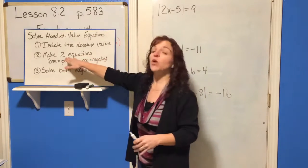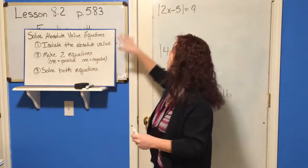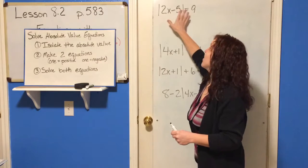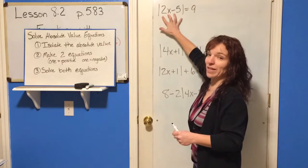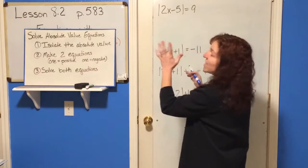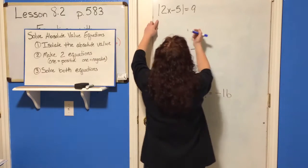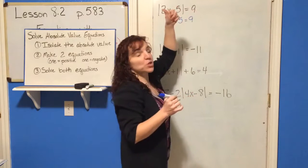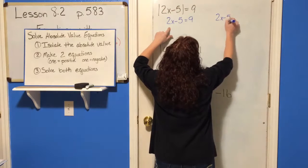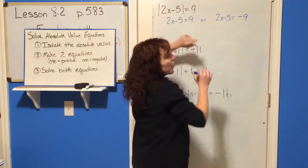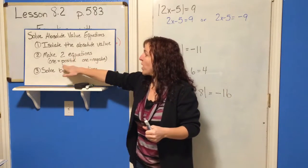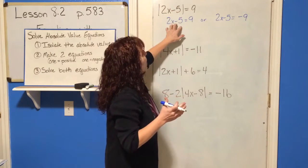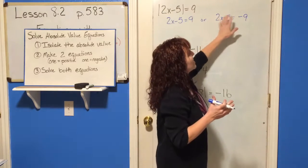Once you do that, you're going to make two equations — one equal to a positive and one equal to a negative. In this case, the problem has already been isolated, so we already have the absolute value of 2x minus 5 equals 9. That's the first step — it's already by itself. Step 2 is to make two equations: one positive and one negative. So ignore the absolute value symbols and say 2x minus 5 could equal 9, but that distance could be the opposite direction, so 2x minus 5 could equal negative 9. Those are your two possible equations.